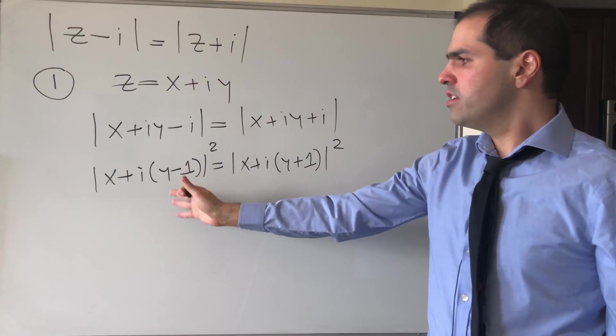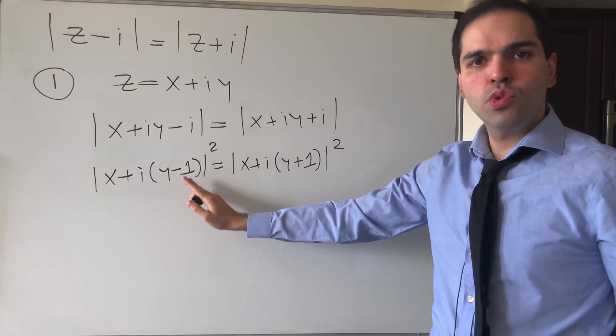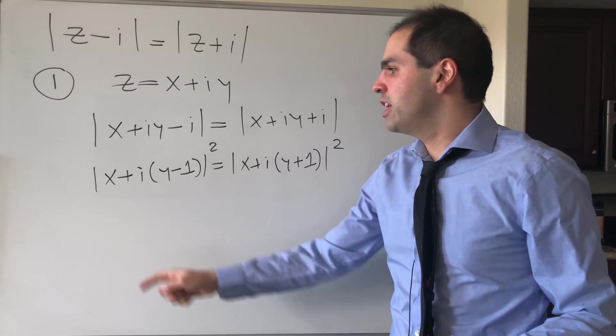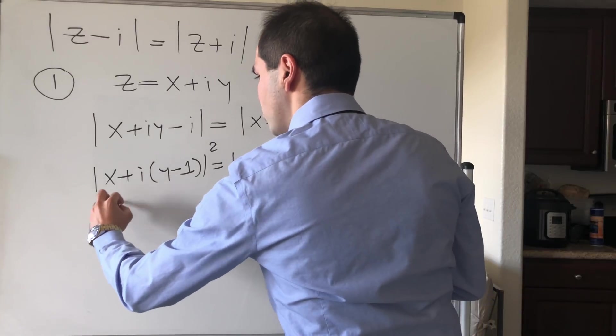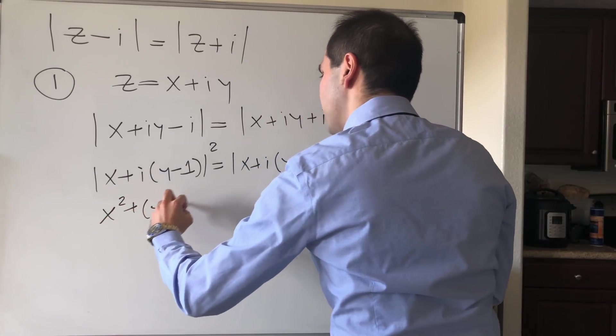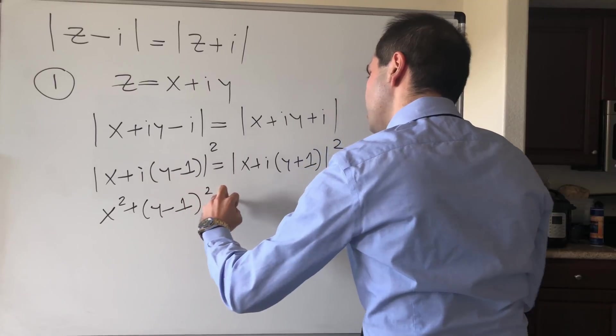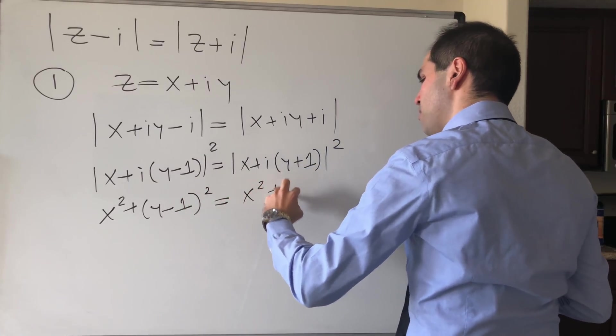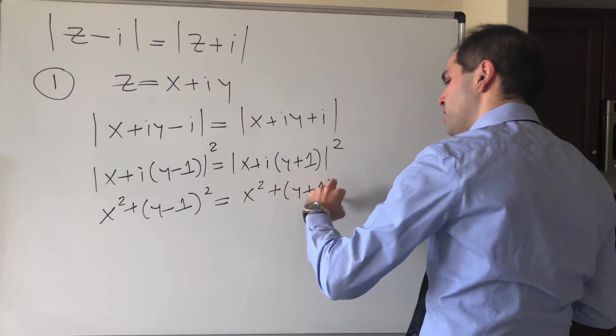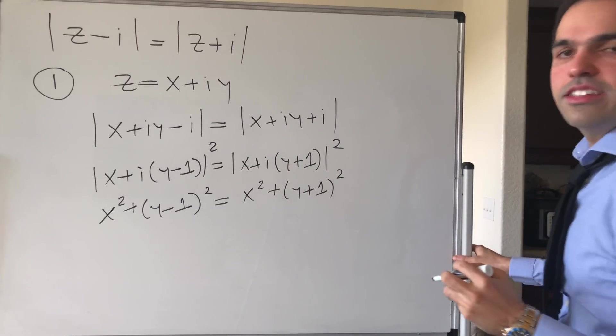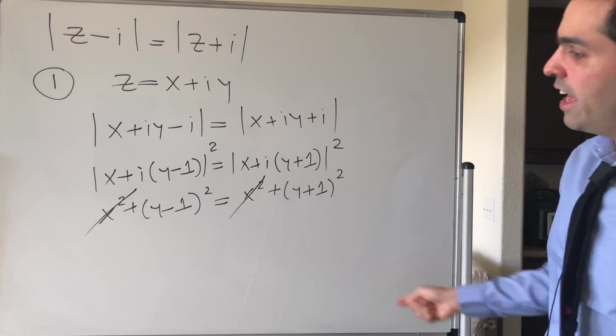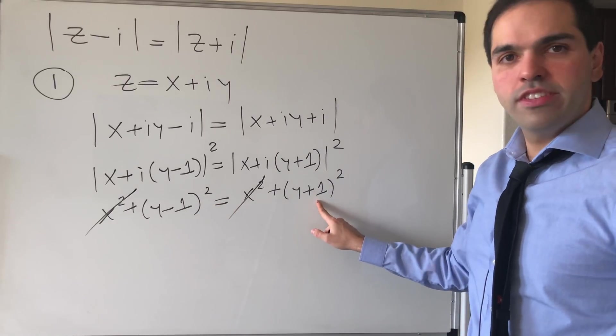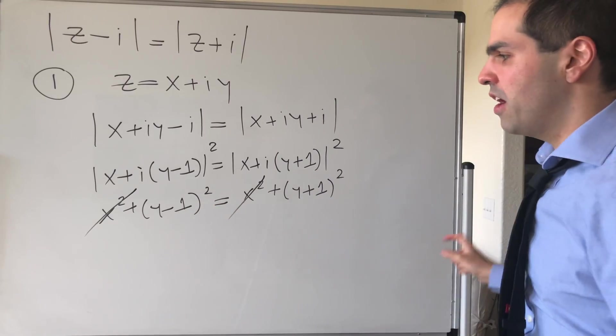Now, what is the definition of absolute value squared? Just like the Pythagorean theorem, it's just this squared plus this squared. So we get x squared plus y minus 1 squared equals x squared plus y plus 1 squared. And the nice thing is the x's, they cancel out. And then what do we get?